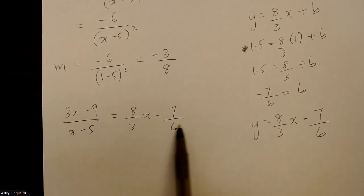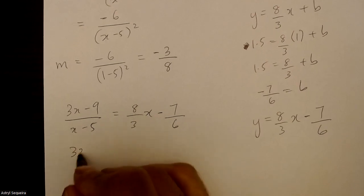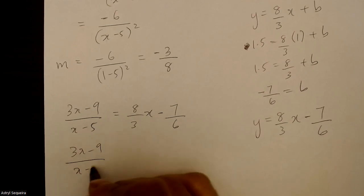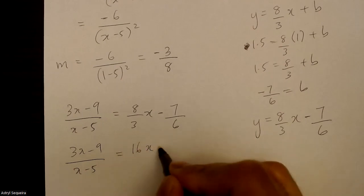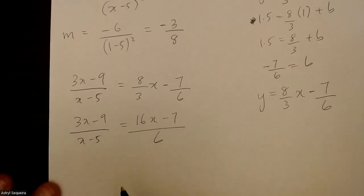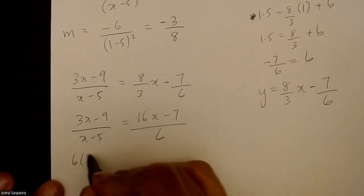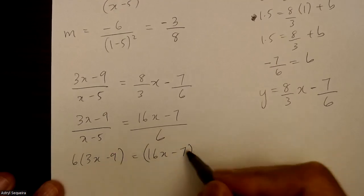I'll start by making a common denominator on this side. So I'm going to multiply the top and bottom here by 2. Then I will cross multiply.